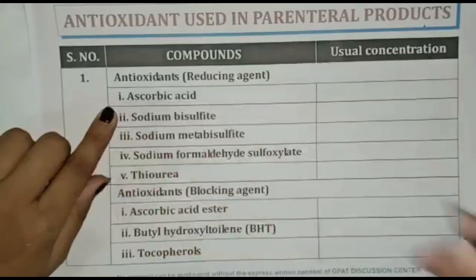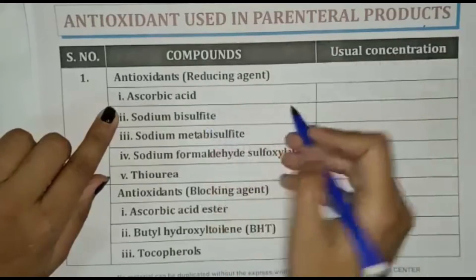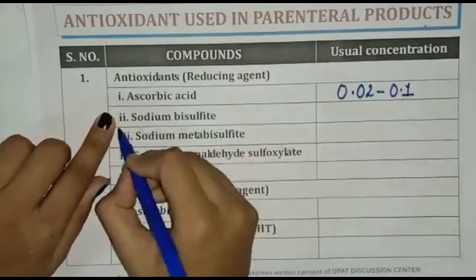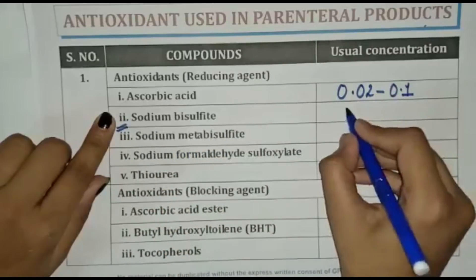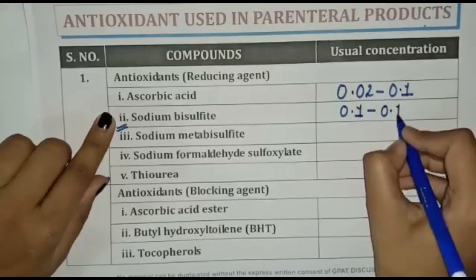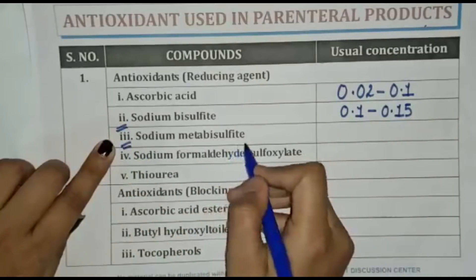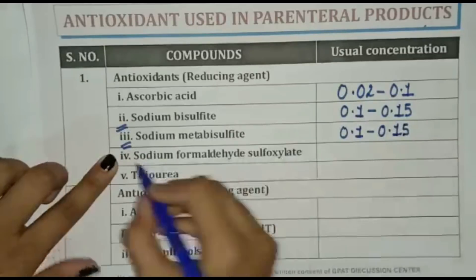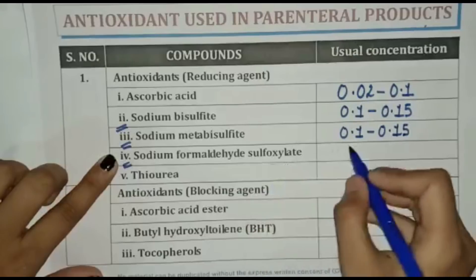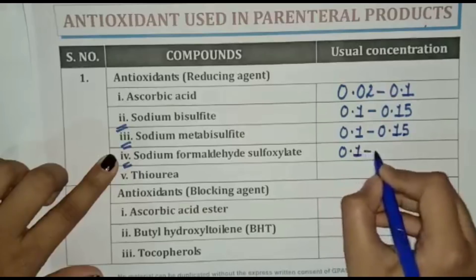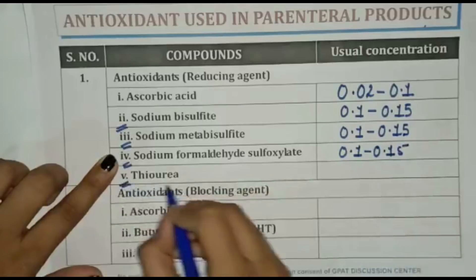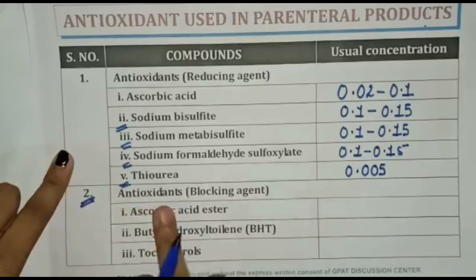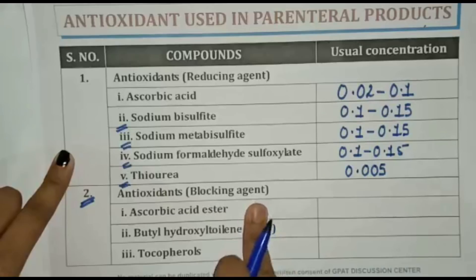Now let us discuss about concentrations of a few antioxidants. Ascorbic acid concentration is 0.02 to 0.1. Sodium bisulfite concentration is 0.1 to 0.15. Sodium formaldehyde sulphoxylate concentration is 0.1 to 0.15.